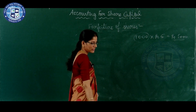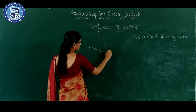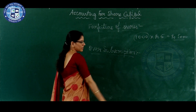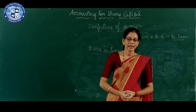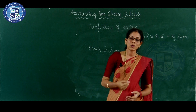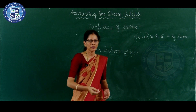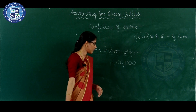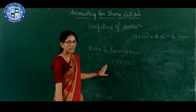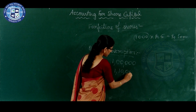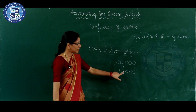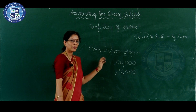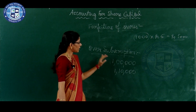Now let us study about over subscription. Over subscription is when the company receives applications more than the number of shares it offered to the public. In the previous example, the company issued application for 1 lakh shares but received applications for 1 lakh 10,000 shares. This extra 10,000 is called as over subscription.